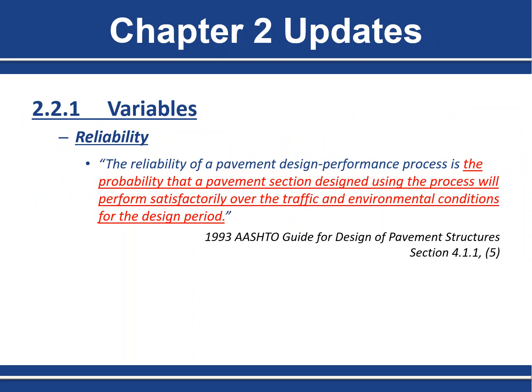The first update is the clarification made to the definition for reliability in Section 2.2.1, which defines the variables in the AASHTO design equation. The 1993 AASHTO guide defines reliability as the probability that a pavement section designed using the process will perform satisfactorily over the traffic and environmental conditions for the design period. This definition supports the idea that there should be a single reliability value for a project.